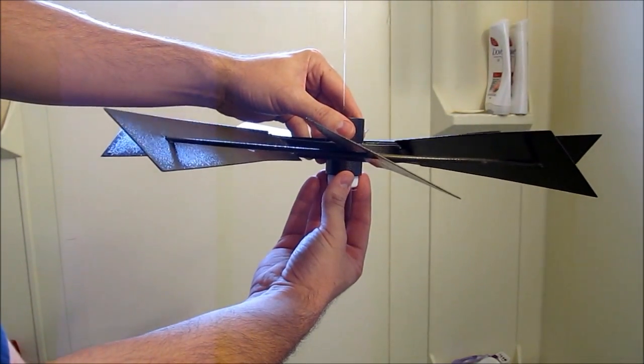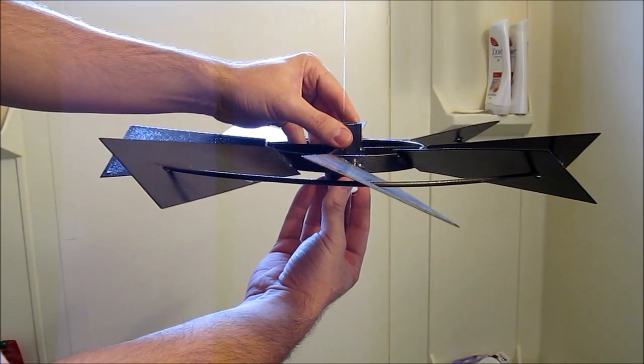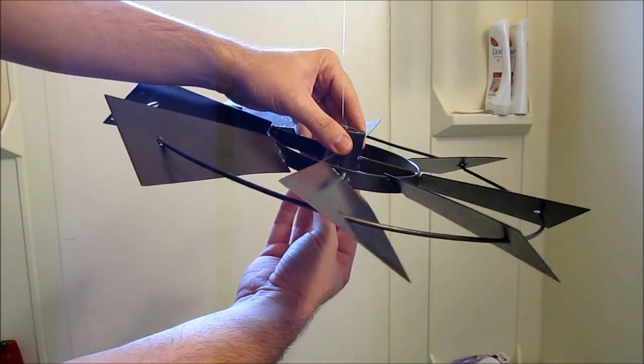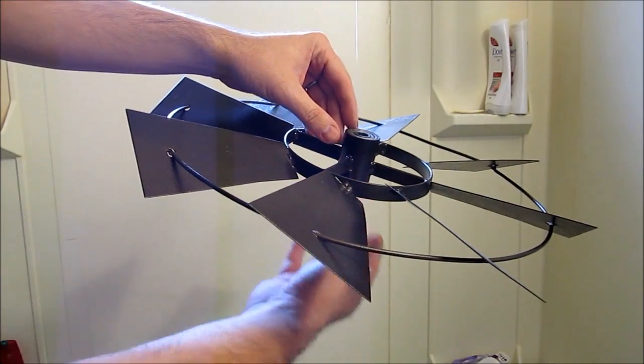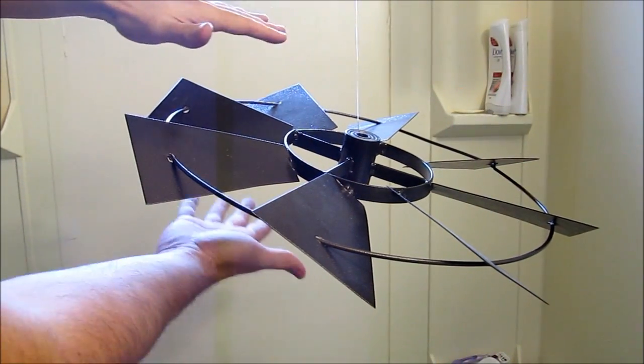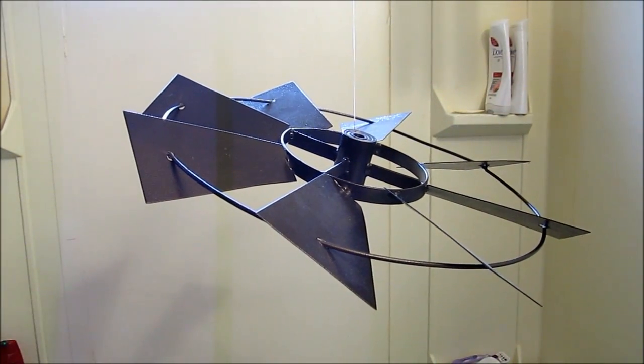So what we'll ultimately want at the end is this to be approximately level. Now right now, it's going to naturally be unbalanced. Obviously, it's heavier on this side than it is over here. And now I just need to balance it.